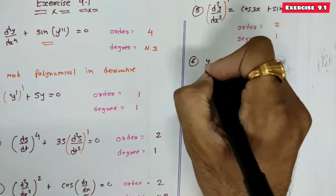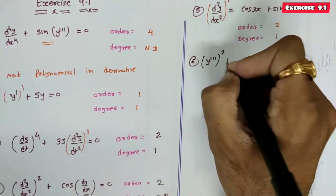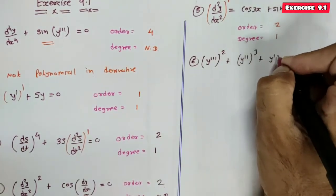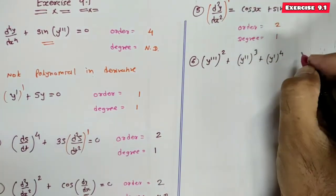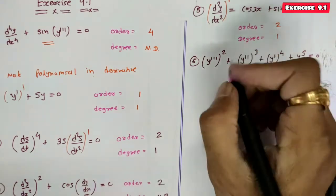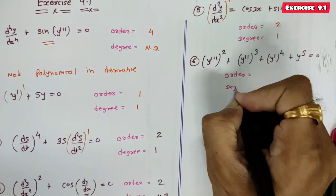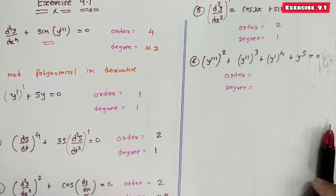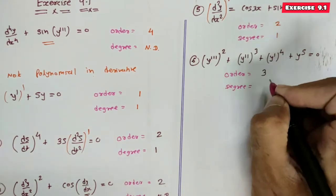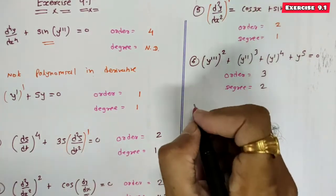Equation 6: (y''')² + (y'')³ + (y')⁴ + y⁵ = 0. Determine the order and degree of this differential equation.